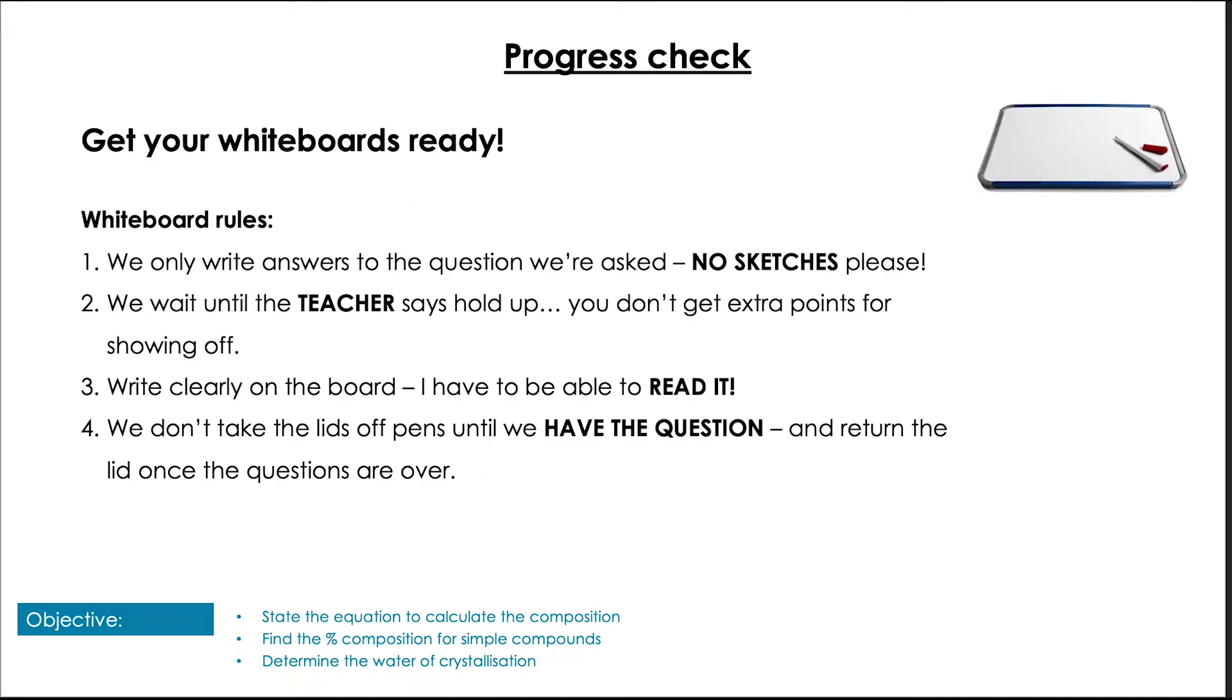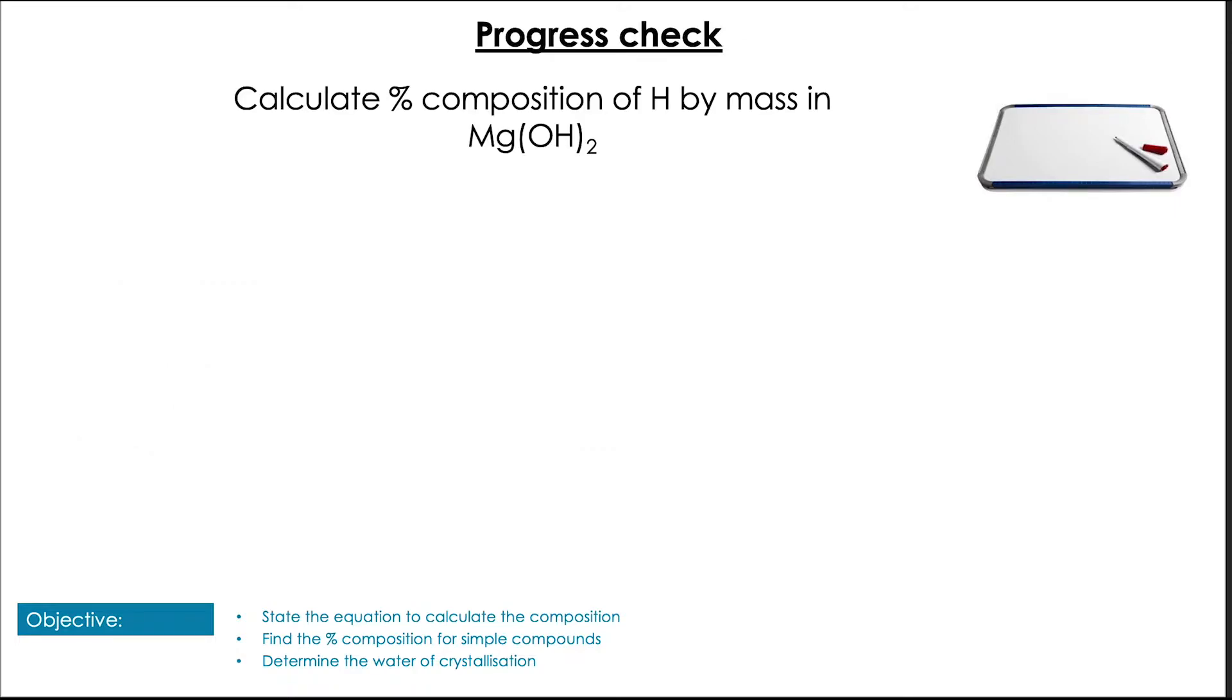So let's get you trying a question. Here's the first one. I want you to calculate the percentage of hydrogen in magnesium hydroxide. Pause the video and have a go at that. Pop them up! So hopefully here you've got 2 times 1.01 over 58.33, which is the molecular mass of the total molecule, times 100 equals 3.46%.